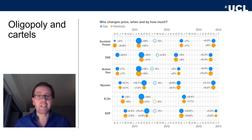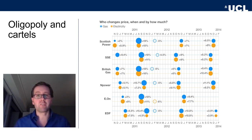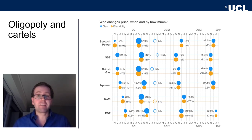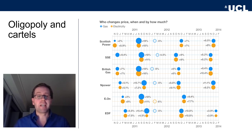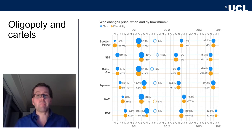Firms don't need explicit agreements in many cases to engage in behavior that is harmful for consumers. Unless competition authorities have powers to use market behavior as evidence — if they need hard evidence like wiretaps — then in many cases they will not be able to fight these oligopolies and cartels.